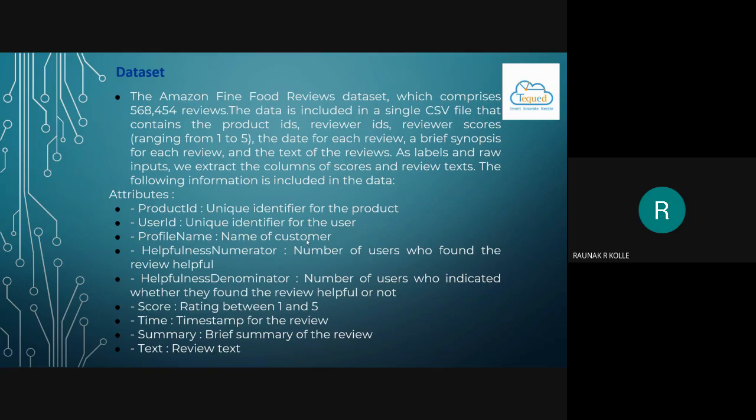As labels and raw inputs, we extract the columns of scores and review texts. The following information is included in the data. Attributes: product ID which is the unique identifier for each of the products, user ID which is the unique identifier for the customer or the user, profile name that is the name of the customer, helpfulness numerator that is number of users who have found the review helpful, helpfulness denominator that is the number of users who indicated whether they found the review helpful or not, score which is a rating from 1 to 5, time that is the timestamp of the review, summary that is the brief summary of the review, and text which is the review of the text.